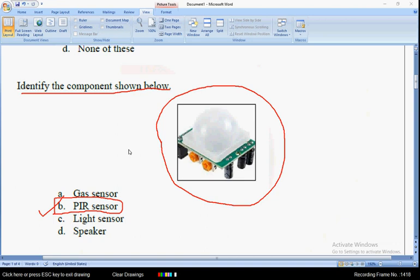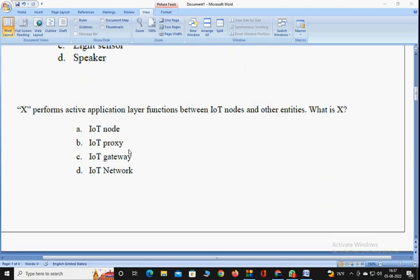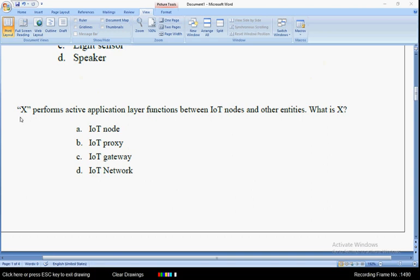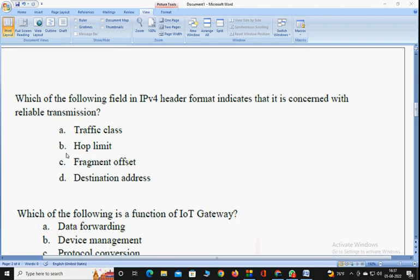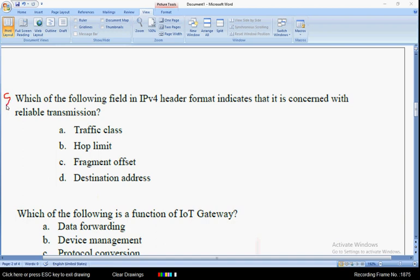Coming to the fourth question: X performs active application layer functions between IoT nodes and other entities. What does X represent here? The X represents IoT proxy, so mark option B as the correct answer for the fourth question.